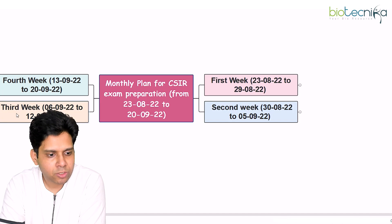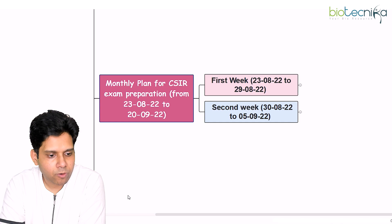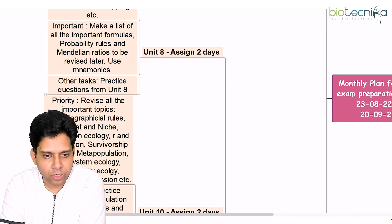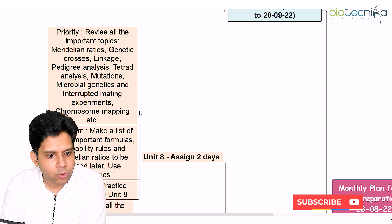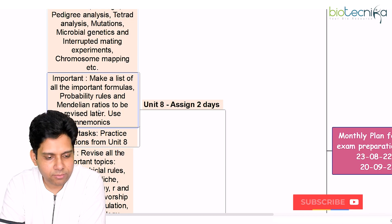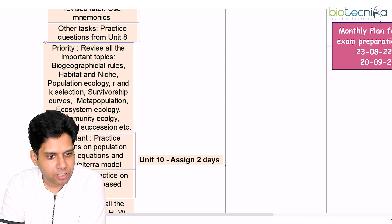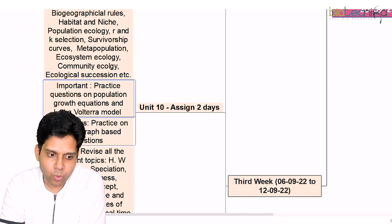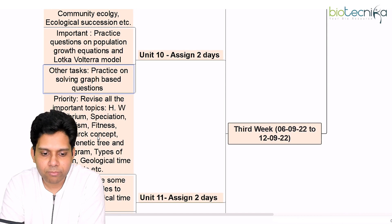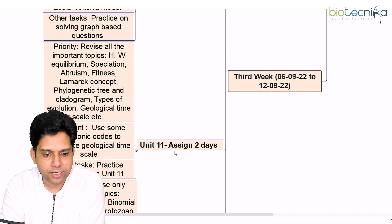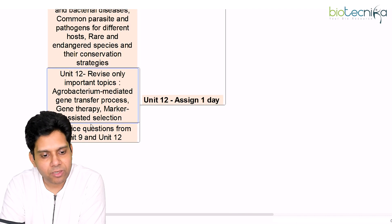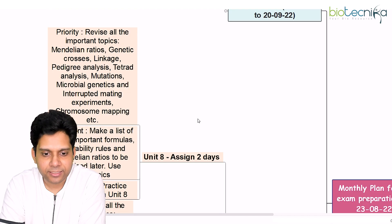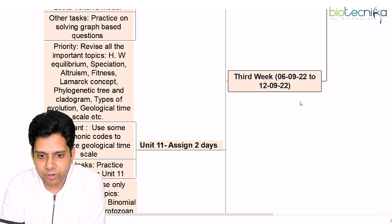Now let's move on to the third week. There's a lot covered here — pedigree and prioritization are mentioned. What is important is highlighted, along with the prioritization list: what tasks you have to accomplish, everything mentioned unit-wise. This is an amazing tool we've built for all of you, and it's available as a PDF for everyone.